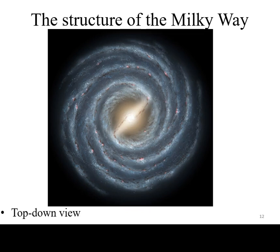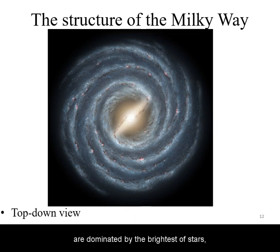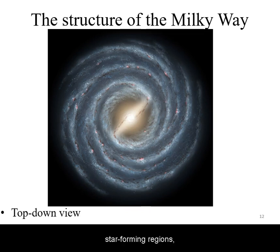In a top-down view, the Milky Way galaxy would have an elongated central bulge of a mix of stars. It will be dominated by a yellowish glow. Spiral arms wrap around this bulge. The spiral arms are dominated by the brightest of stars, which are blue giants. We also observe star-forming regions as well as dark dust.